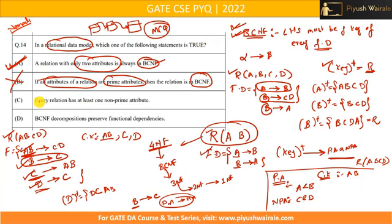Option C says: every relation has at least one non-prime attribute. This is also not correct. As we just showed with R(A,B,C,D) where all attributes are prime, a relation can have all prime attributes and no non-prime attributes at all.